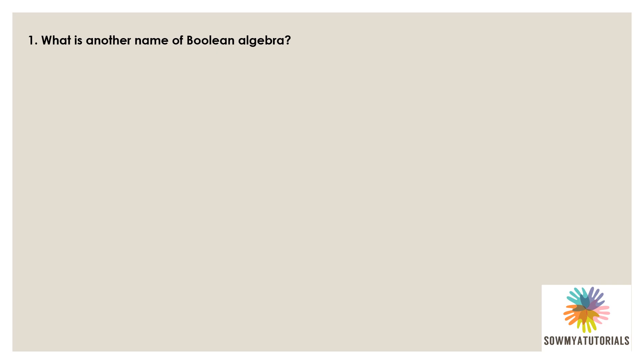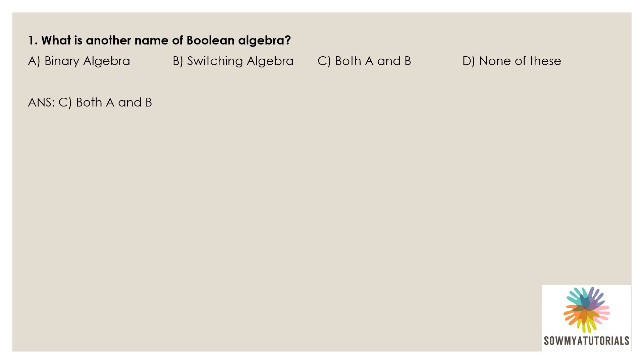The first question is: what is another name of Boolean Algebra? Options are: A) Binary Algebra, B) Switching Algebra, C) Both A and B, D) None of these. The correct answer is option C, both A and B — Boolean algebra is also called binary algebra and switching algebra.